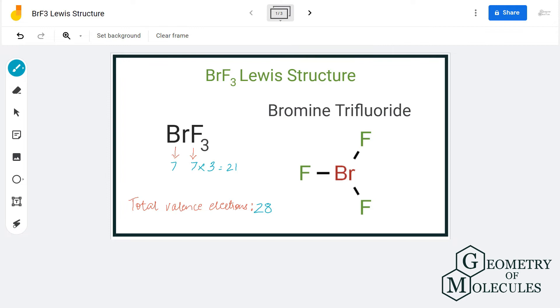Now we'll place the atoms and see what bonds they form. Bromine will go in center as it is less electronegative compared to fluorine atom. All the fluorine atoms will be arranged around bromine like this. Now we'll start placing the electrons around individual atom.